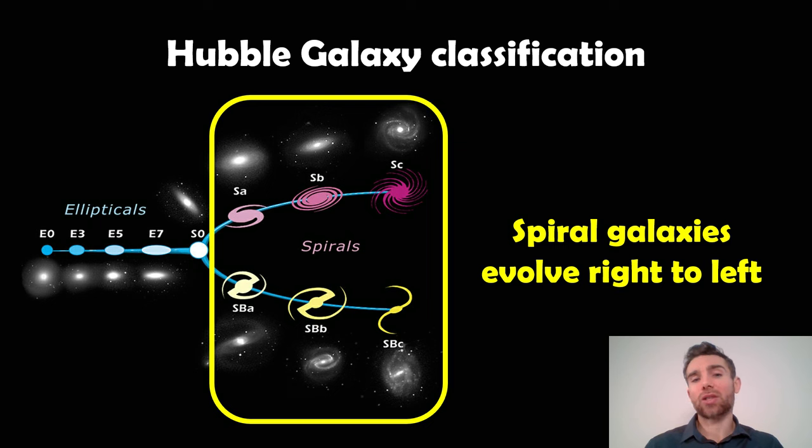Now if we go back to the Hubble classification system for galaxies, you have this tuning fork style diagram and on that we have elliptical galaxies and we have spirals. Spirals actually sit to the right hand side of this diagram and they actually evolve right to left. So if you look on the upper right for the spirals you can see SC, that would actually be a younger spiral galaxy than SA which is towards the left.